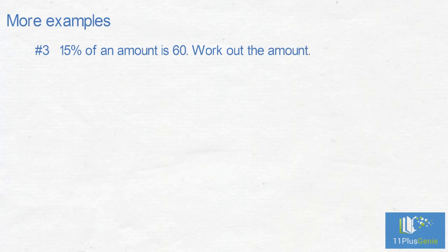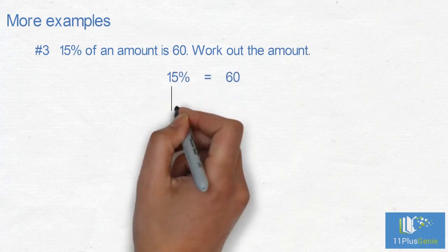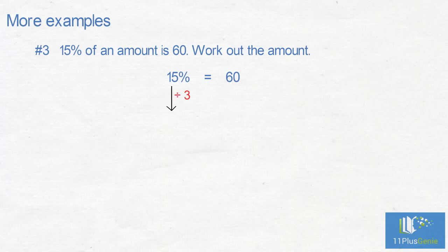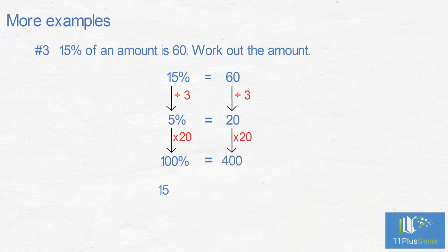More examples. Number 3: 15% of an amount is 60. Work out the amount. 15% equals 60. Divide by 3. 15% divided by 3 equals 5%, and 60 divided by 3 equals 20. We now times by 20 to get 100%. 5% times 20 equals 100%, and 20 times 20 equals 400. 15% of 400 equals 60.